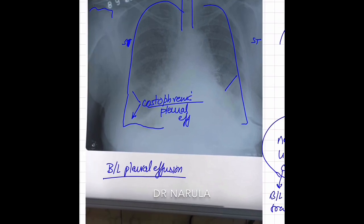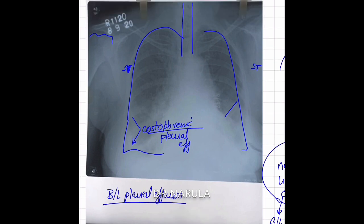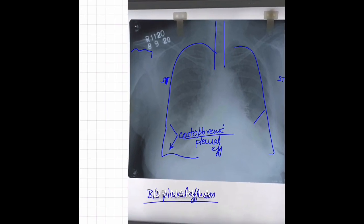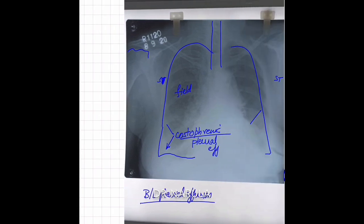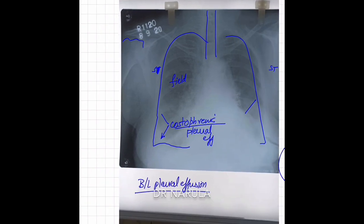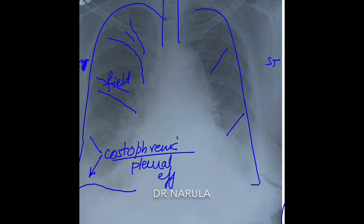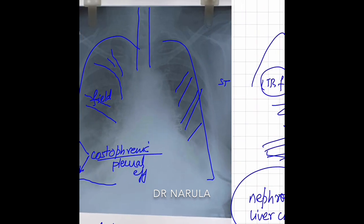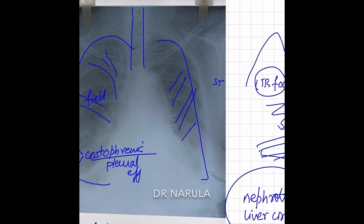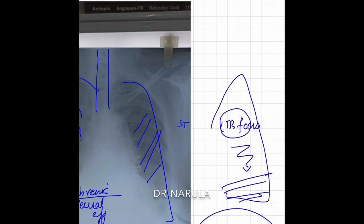Now, the costophrenic angles are obliterated on both sides. If you look at this lung field and compare with a normal X-ray, it doesn't appear as black. If you trace one vessel here, you can almost trace it all the way to the end — you can follow the vessels nearly to the periphery of the lung field.